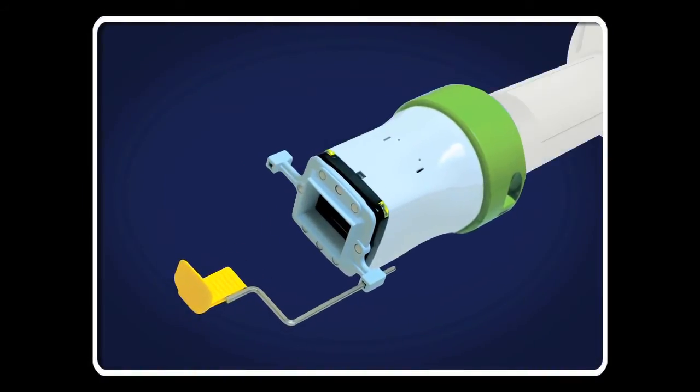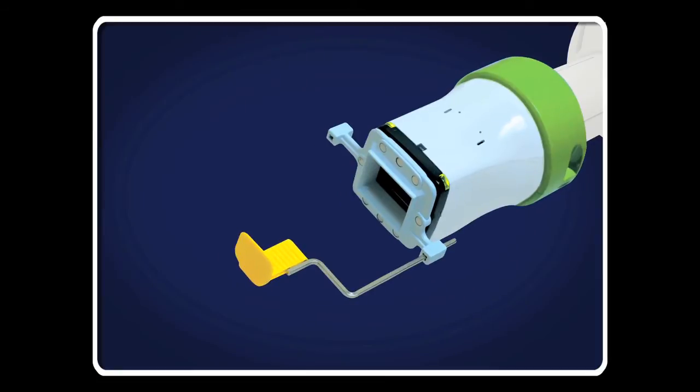TruAlign is a rectangular collimator that slides over the cone of your existing X-ray system to shape and control the size of the X-ray beam to the size of the receptor.